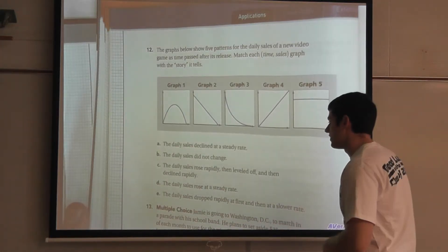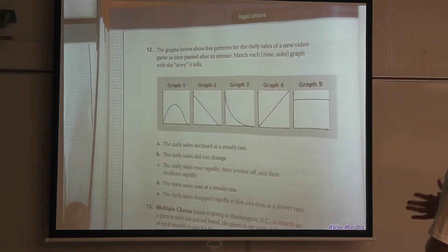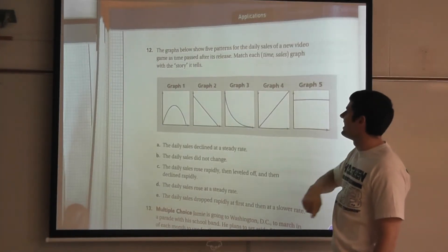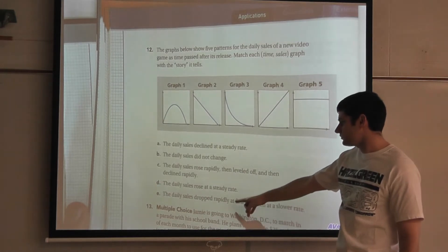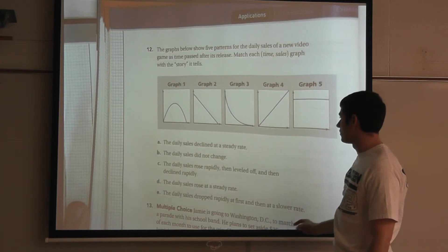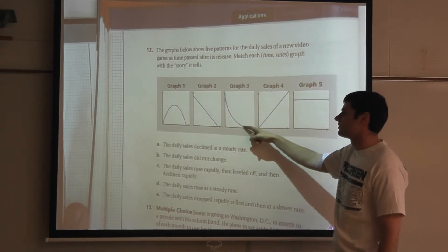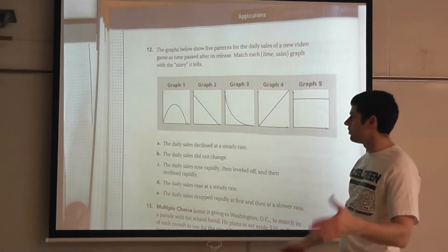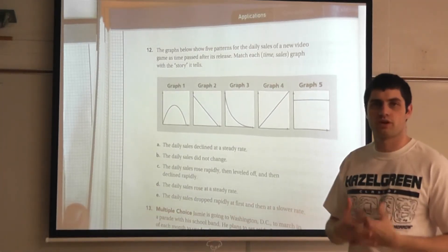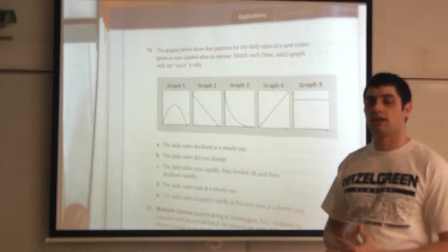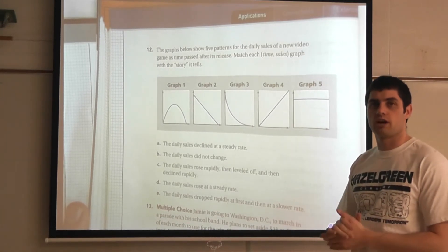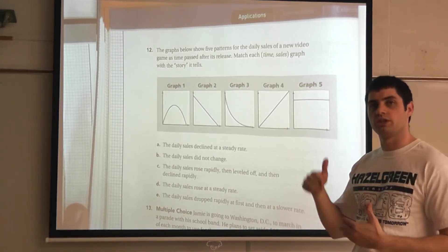And then lastly, E, the daily sales dropped rapidly at first and then at a slower rate. That leaves us with one left graph. I can't talk right today. So we take a look at graph 3. It says they dropped rapidly at first, they drop rapidly and then at a slower rate. So it still decreases, but now they're decreasing at a slower rate at the bottom. So graph 3 is going to match the story in E. So a lot of times it helps for us to interpret graphs to make some connections and again, to analyze for ourselves to make these correct decisions. And here's a perfect example on a couple of these graphs to kind of match what the story tells in the graph.